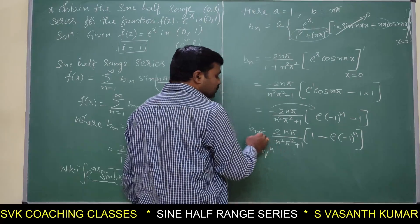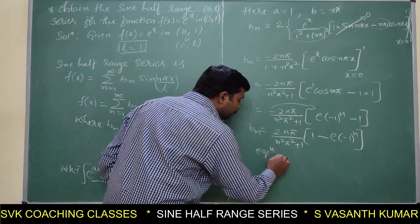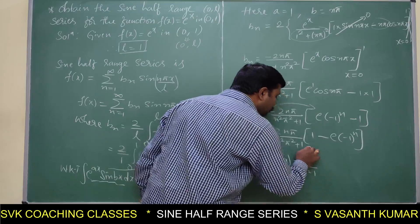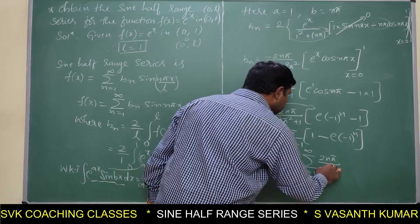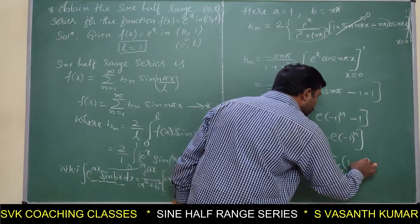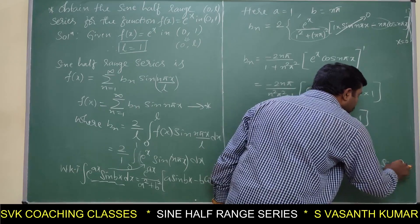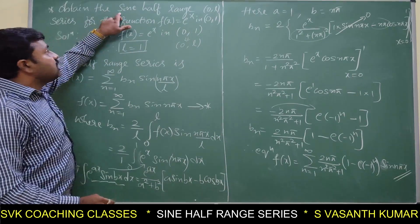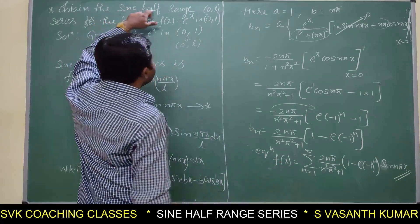Substituting bn into equation star, the final sine half-range series is: f(x) = Σ(n=1 to ∞) [2nπ/(n²π²+1) · (1 − (−1)^n·e)] · sin(nπx). This series expansion is the sine half-range series for f(x) = e^x on [0,1].